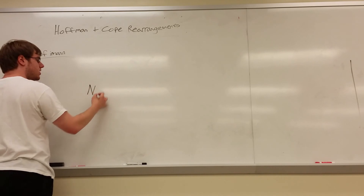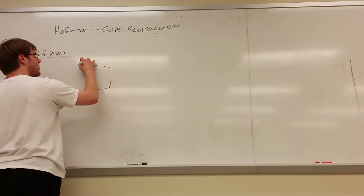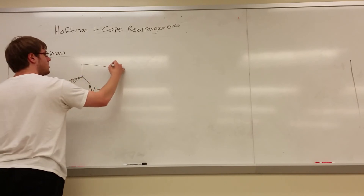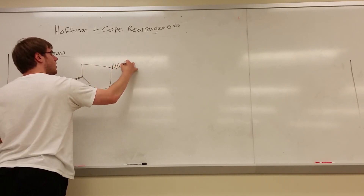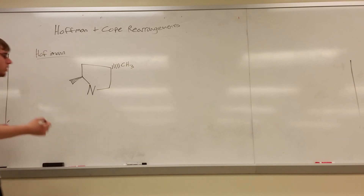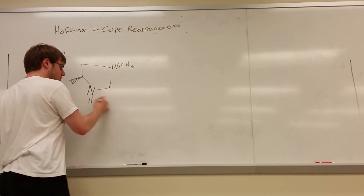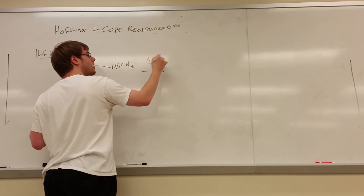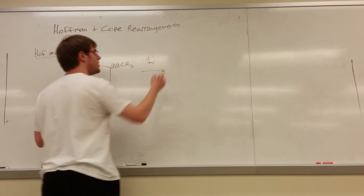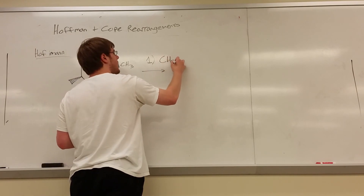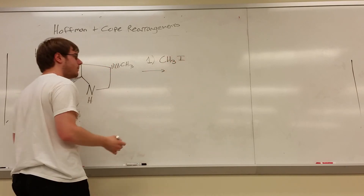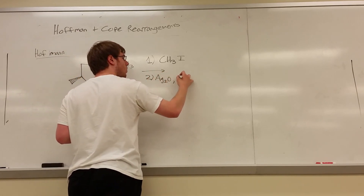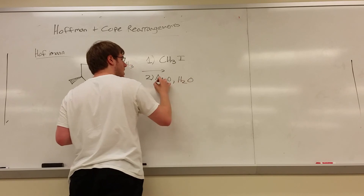Let's say we have nitrogen in a five-membered ring, and I'll put a wedge methyl here and a dashed methyl there, and we're going to do the Hofmann rearrangement. What will be over the arrow is step one: a carbon with a leaving group on it — typically you'll see CH₃I or CH₃Br. Step two will be Ag₂O, water, and heat.